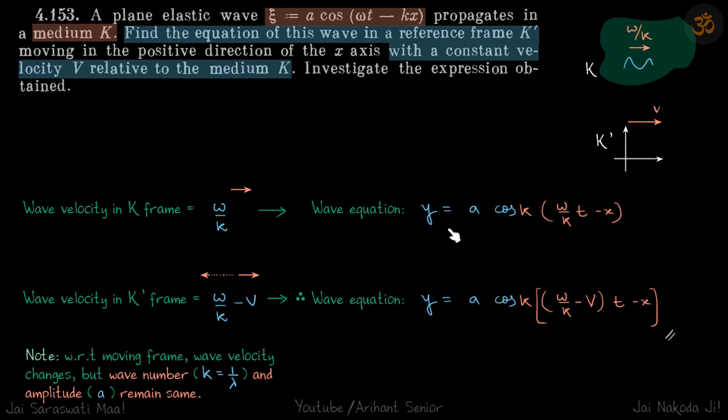Therefore, this wave equation becomes a cos k, so ω/k, that is the wave velocity here, will be replaced by (ω/k - v) times t minus x. So this is our answer.